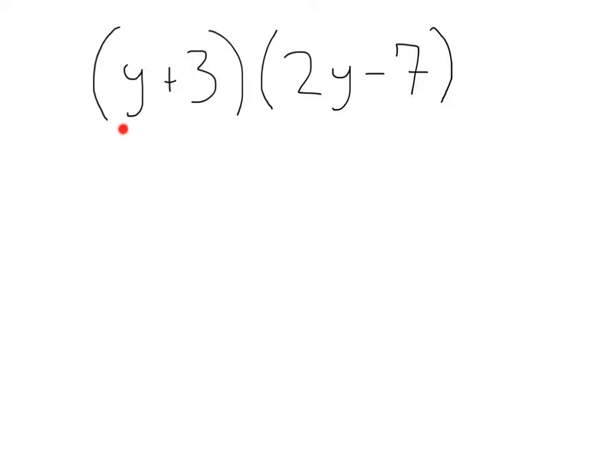How about this one here? We have y plus 3 in parentheses times 2y minus 7 in parentheses. You may have learned something like this in the past, and you might have heard the term FOIL. While that does apply here, I want you to throw that out and listen to what you're actually doing. You're distributing each term in the first group to each term in the second group.